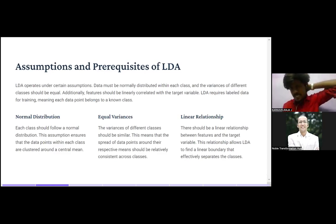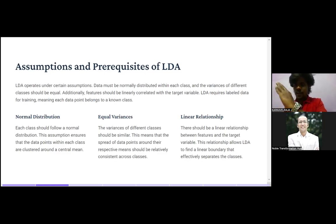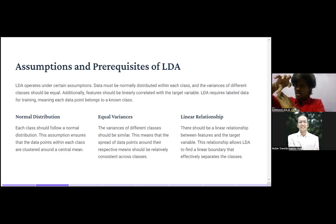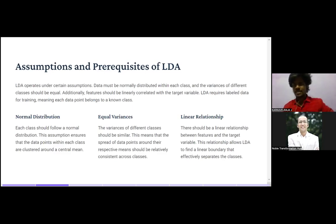Third, linear relationship: since it is Linear Discriminant Analysis, it assumes the data points are linearly distributed. There should be a linear relationship between the features and the target variable. This linear relationship allows LDA to find the linear boundary that effectively separates the classes. The data points within one class should have less distance between them compared to data points across different classes.